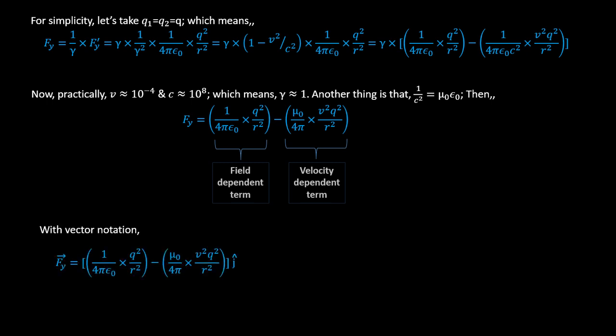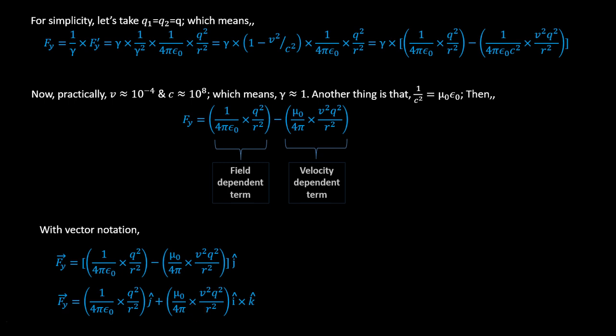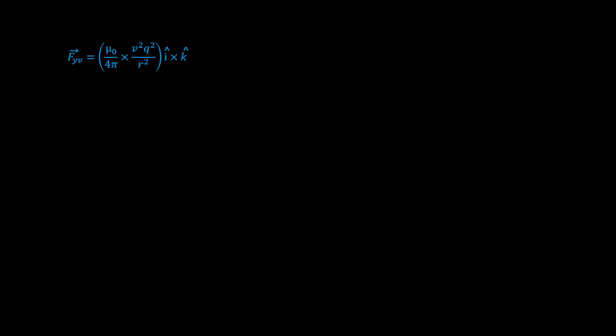Writing with vector notation: Fy = (1/4πε₀)(q²/r²) ĵ minus (μ₀/4π)(v²·q²/r²) ĵ. The force is in the y-direction only. The minus sign becomes plus because ĵ = k̂ × î, but we write î × k̂, so ĵ = −(î × k̂). The two negatives give a plus. So the velocity-dependent part becomes (μ₀/4π)(v²·q²/r²)(î × k̂).